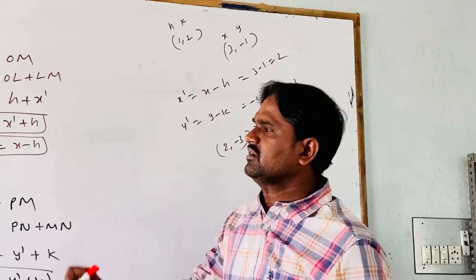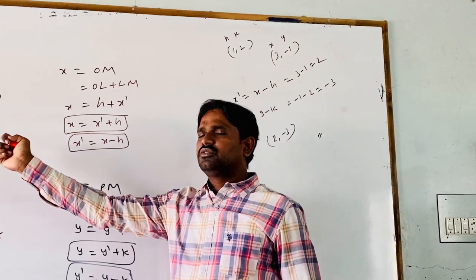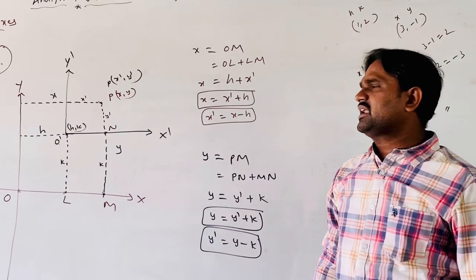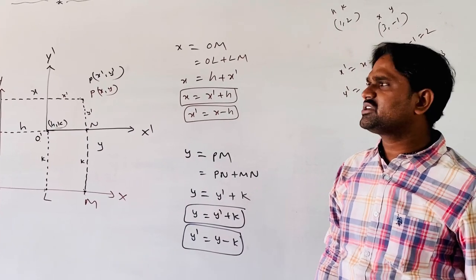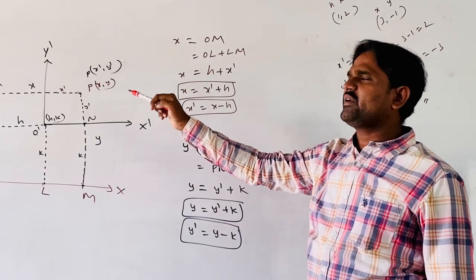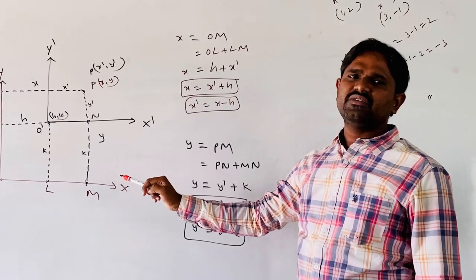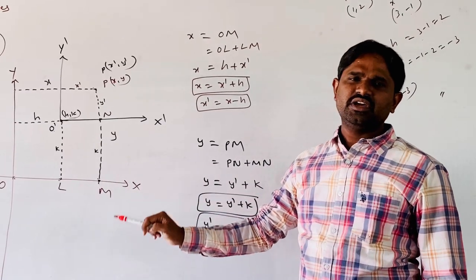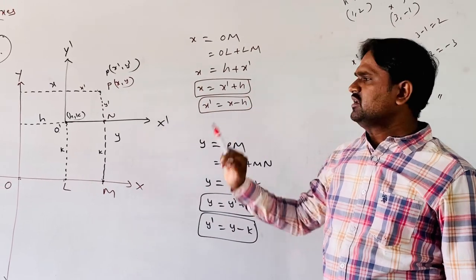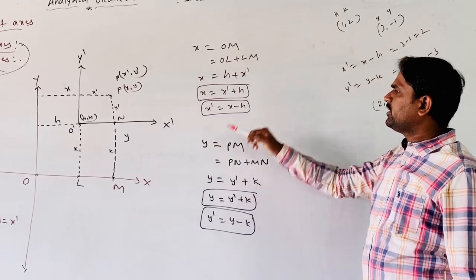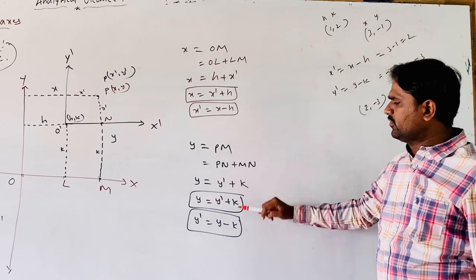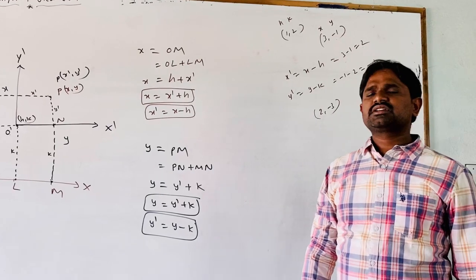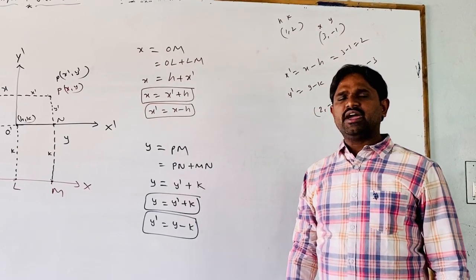Today, we discussed transformation of axis. There are two types of transformations: translation of axis and rotation of axis. Translation of axis means without changing the direction of X and Y coordinate axes, we are shifting the origin to any other point. Using this derivation, we can find the coordinates of the new system. In the next class, we are going to discuss about the rotation of axis. Thank you.